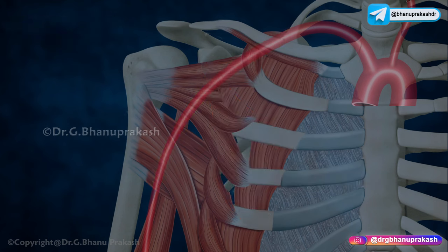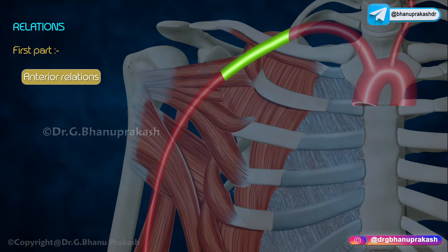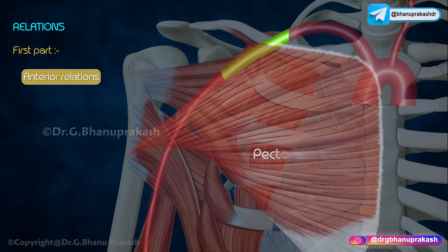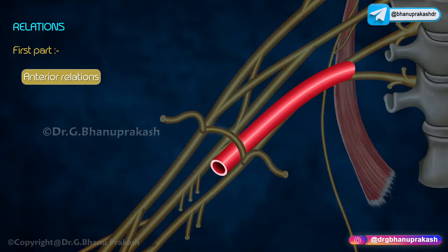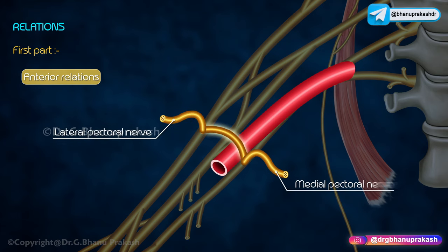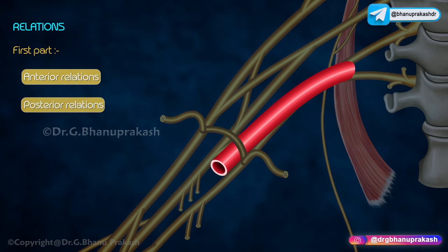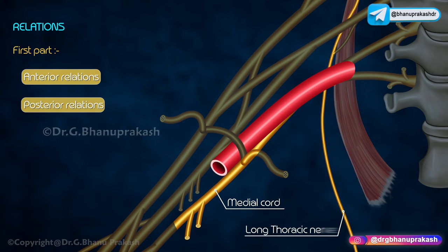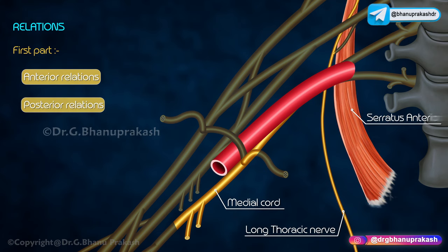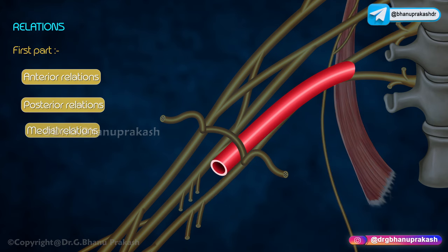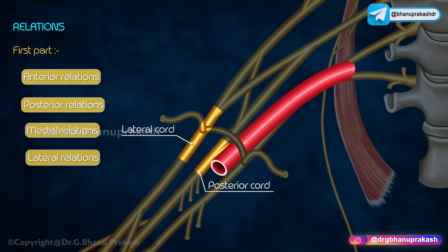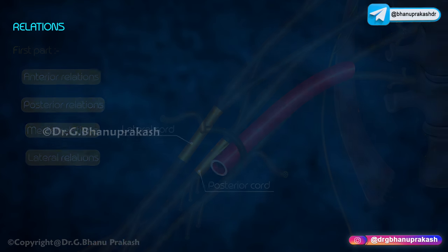Relations of the first part of the artery: anteriorly, it is related to the pectoralis major and the loop of communication between the lateral and medial pectoral nerves. Posteriorly, it is related to the medial cord of the brachial plexus, the long thoracic nerve, and the first digitation of the serratus anterior muscle. Medially lies the axillary vein, and laterally the lateral and posterior cords of the brachial plexus.